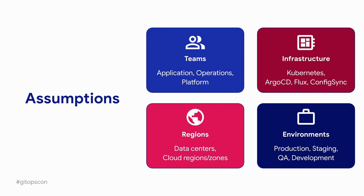Now with GitOps out of the way, I want to talk about other assumptions. For teams, we'll categorize them into coarse buckets: application teams, operation teams, and platform teams. For infrastructure, we'll be assuming Kubernetes as your cloud native deployment and some GitOps tooling — whether it's Argo CD, Flux, or Config Sync. For deployment regions, we base that on where our clusters are physically located, whether in a private data center, a colo facility, or a cloud region. And for deployment environments, we have the standard prod, staging, QA, and dev.